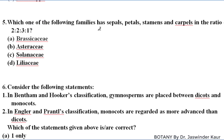Which of the following families has sepals, petals, stamens and carpels in the ratio of 2:2:3:1? In family Brassicaceae, petals are four, sepals are also four, stamens are six in tetradynamous condition (two plus four), and carpels are one. When this ratio is calculated, that gives 2:2:3:1. So this is the correct answer.